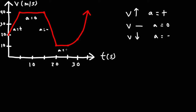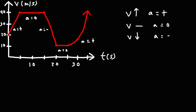Here the acceleration is zero. But here the velocity is increasing, so acceleration is going to be positive. Notice that the velocity is increasing at an increasing rate — we have a concave up curve. So not only is acceleration positive, but the acceleration is increasing.